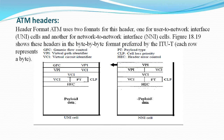Header format. ATM uses two formats for the header: one for the user-to-network interface (UNI) cell and another for the network-to-network interface (NNI) cell. The figure shows these headers in the byte-by-byte format referred to by ITU-T. The 4-bit generic flow control field provides flow control at the UNI level. The ITU-T has determined that this level of flow control is not necessary at the NNI level. Virtual path identifier.